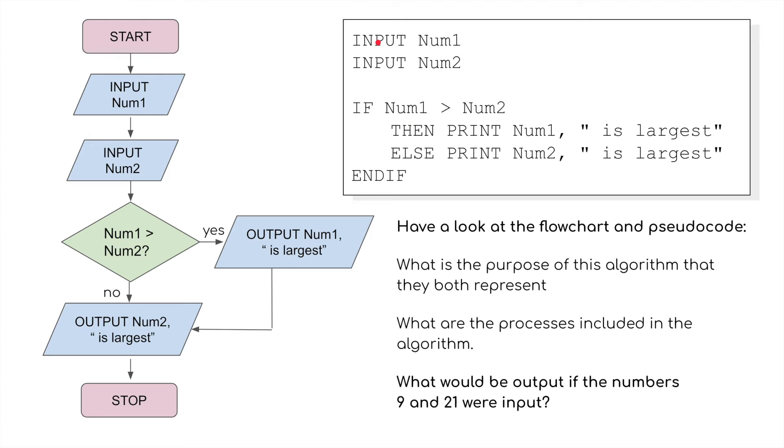It's exactly the same in this one. Input number 1, input number 2. If number 1 is greater than number 2, then print number 1 is largest, else print number 2 is largest. And then we end that if statement.